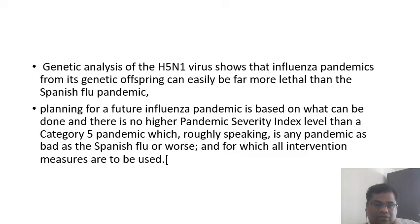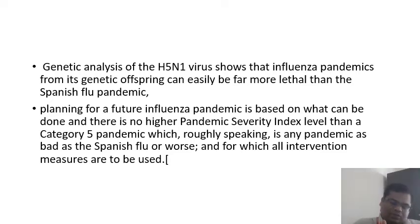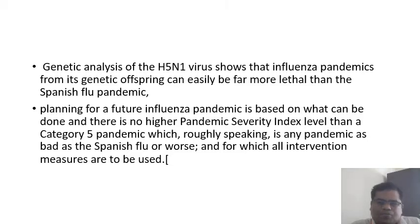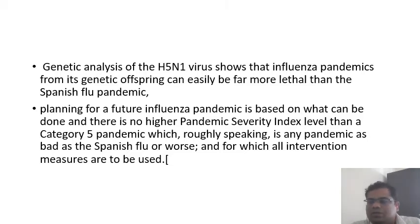H5N1 has the potential to be much more lethal than the Spanish flu, which killed an estimated 20 to 50 million people. It is categorized as a Category 5 pandemic index level — roughly as bad as the Spanish flu. COVID-19 has a case fatality rate of about 2.5 to 3 percent, but if H5N1 mutates to efficient human-to-human transmission, the case fatality could be much higher than both the Spanish flu and COVID-19.